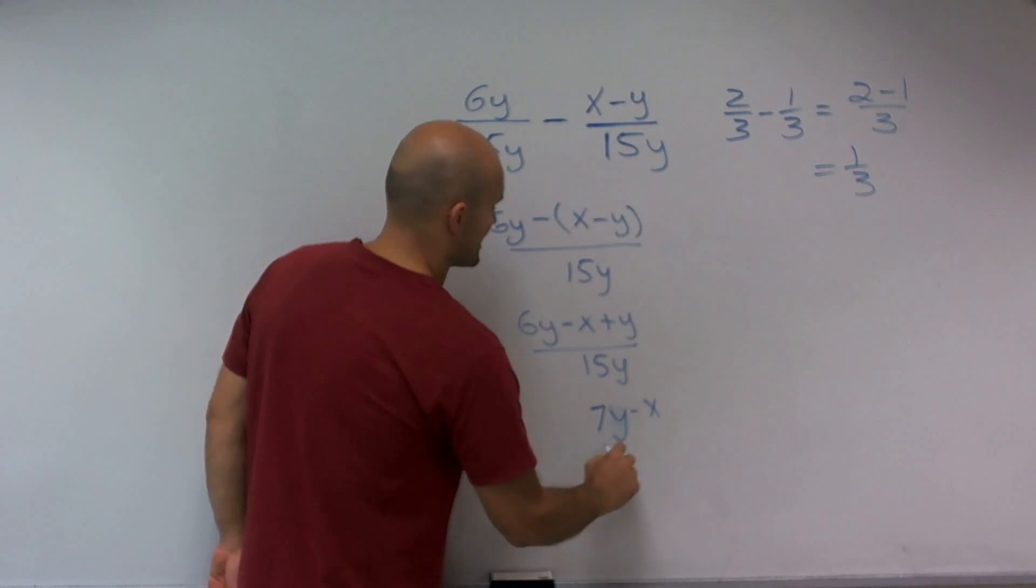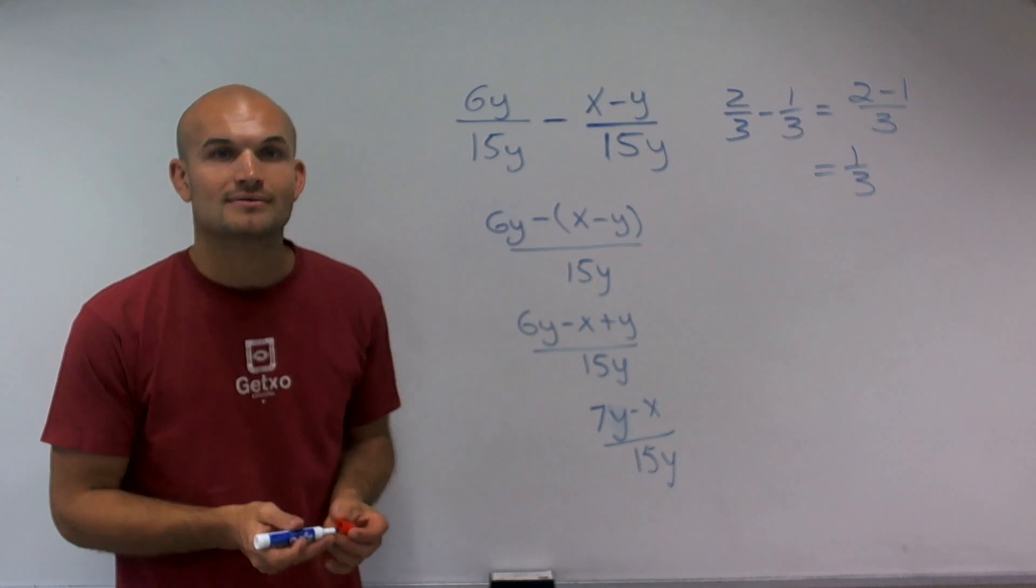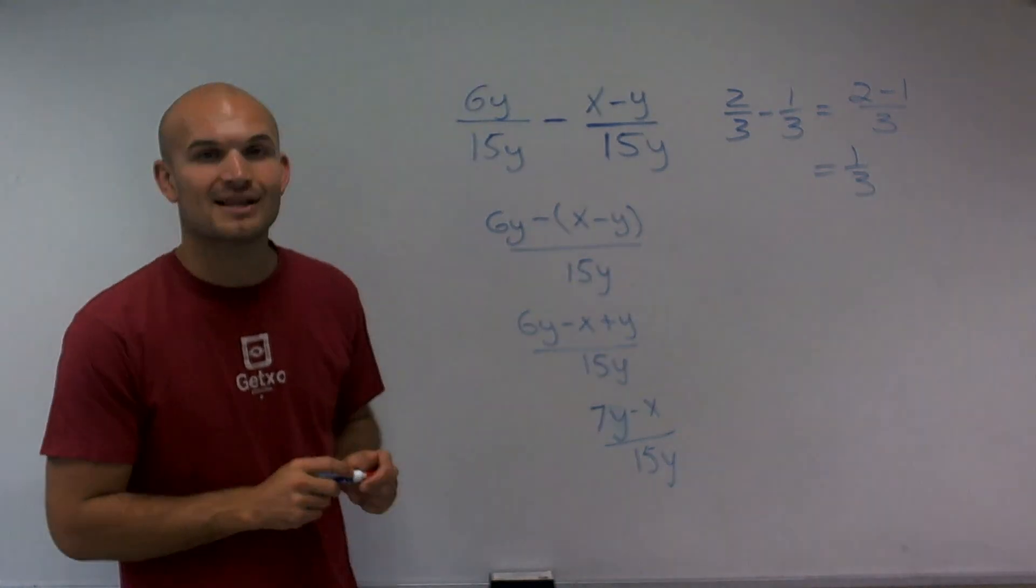7y minus x divided by 15y. And there you go. That's your final answer. Thanks.